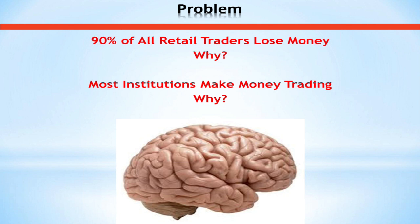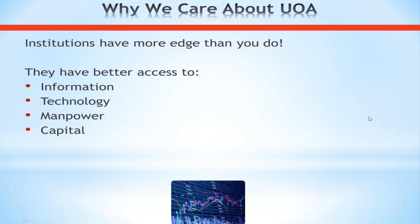We're here today to talk about unusual options activity, and I truly believe that tracking unusual options activity and equity options order flow in the market is the best way to answer this problem: 90% of all retail traders lose money. Most institutions make money. The difference in performance between institutional traders and retail traders really boils down to the advantages and ways that both groups drive their edge.